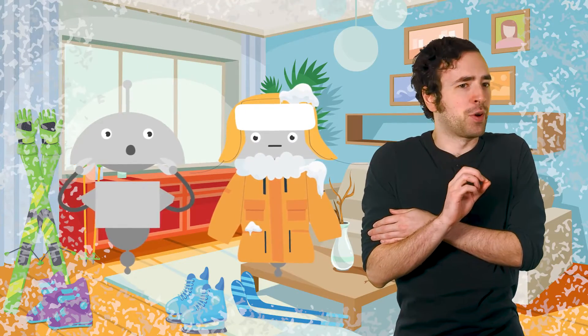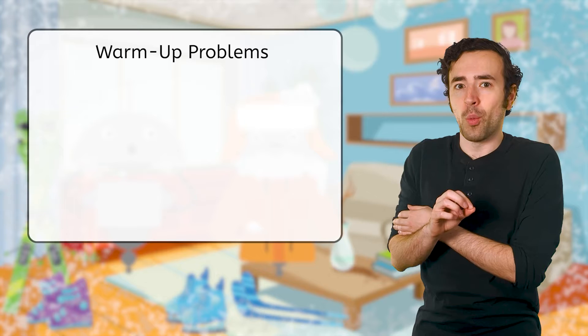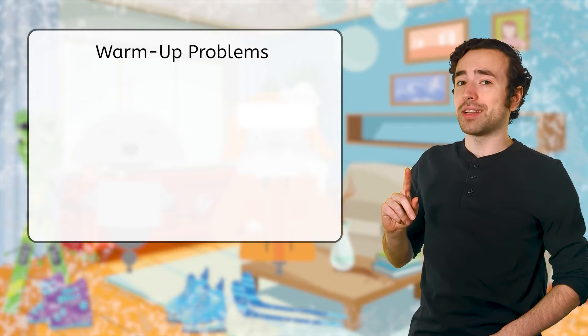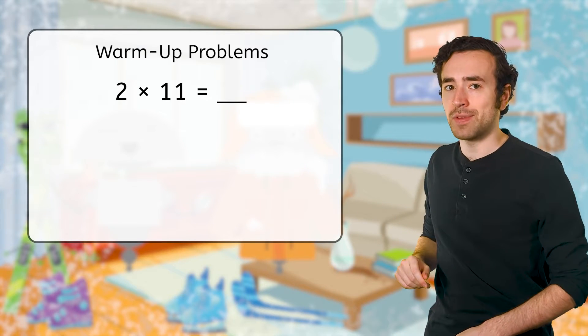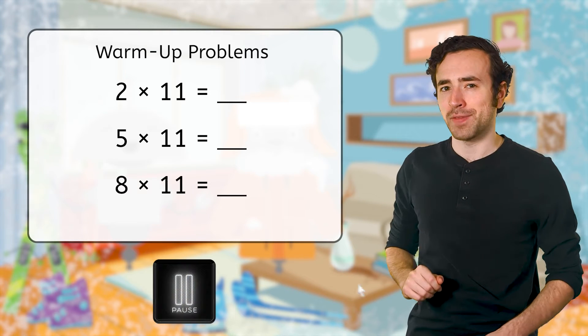We left the front door open a little too long. Ooh, good, some warm-up problems. In your guided notes, solve two times 11, five times 11, and eight times 11.